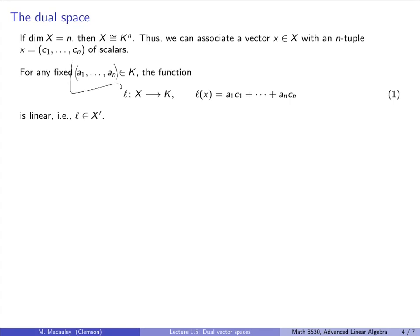So you can think of this in matrix notation as a1, as the row vector a1 up to an times c1 up to cn. Now, writing things as vectors here, so this is L of x, is just a convenient notation for us. I like to think of it as, like, long division.